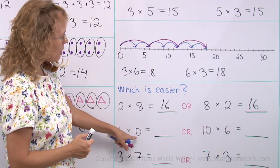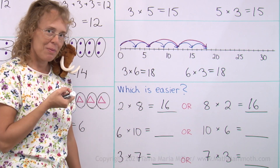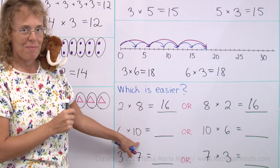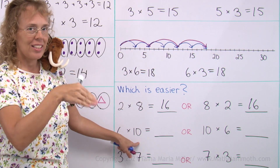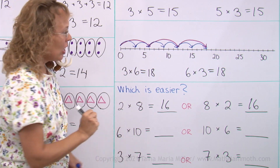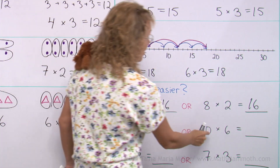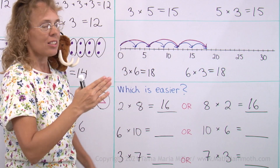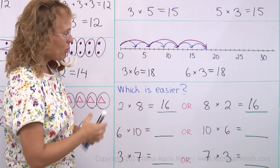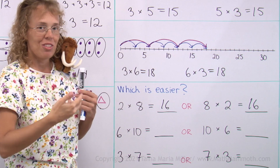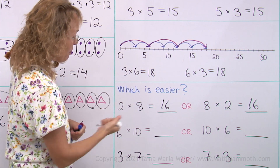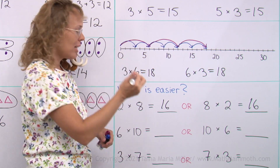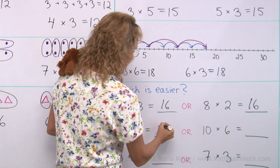Six times ten or ten times six — you can think of it as six groups of ten: ten and ten and ten, ten and ten and ten. Or ten groups of six, adding six ten times. Which one is easier if you're adding to find the total? Six groups of ten — that would be sixty.